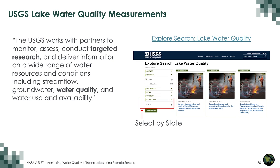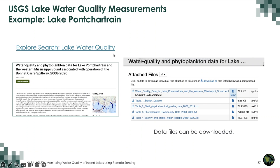USGS also has lake water quality measurements available through the 'Explore Search Lake Water Quality' tool. These are not operational sites — the USGS works with partners to monitor and assess water resources including stream flow, groundwater, water quality, and water use and availability. You can select data by state. Whenever data are collected in lakes, they are made available. An example is Lake Pontchartrain, with data available between 2008 and 2020, which can be downloaded as text files and analyzed.